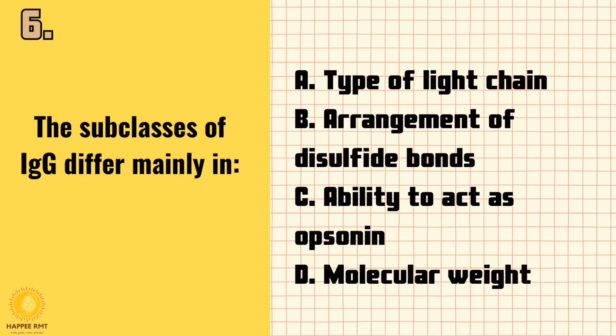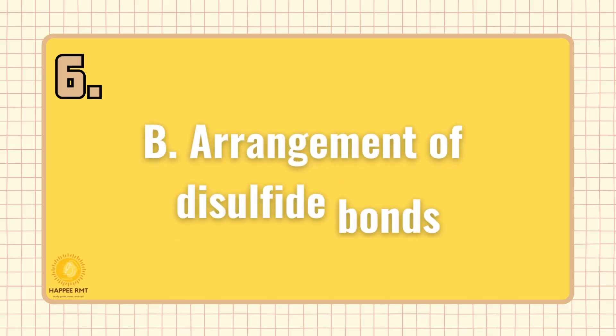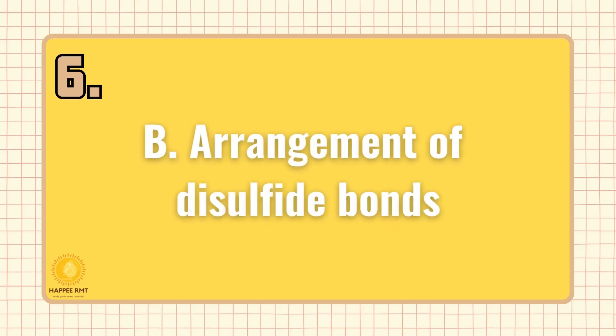Number 6. The subclasses of IgG differ mainly in: A. Type of light chain. B. Arrangement of disulfide bonds. C. Ability to act as opsonin. D. Molecular weight. Answer is B: Arrangement of disulfide bonds.